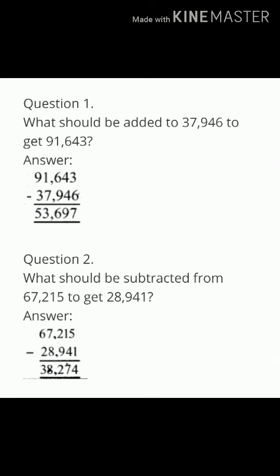Now, the fourth problem, first one: what should be added to 37,946 to get 91,643? So, what we have to do here? 91,643 minus 37,946, then we get the answer 53,697.